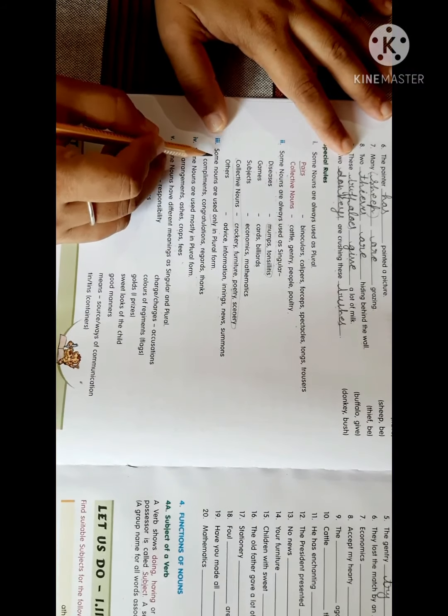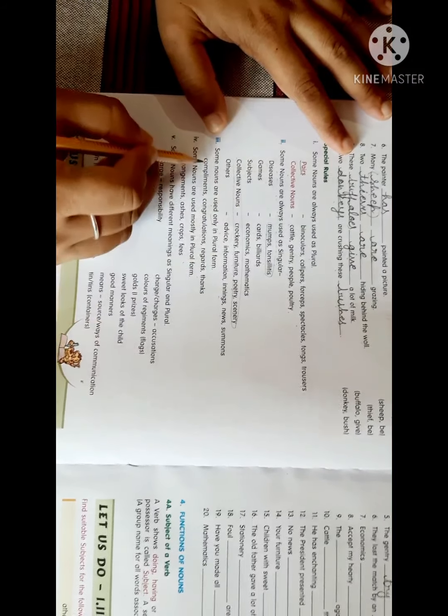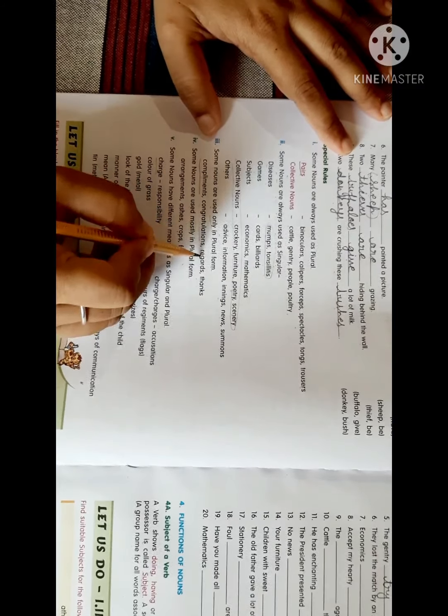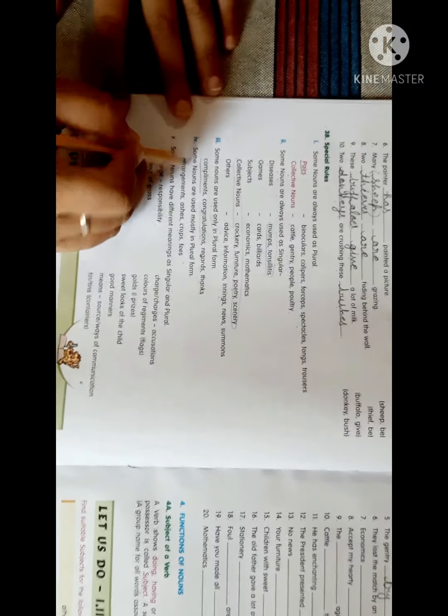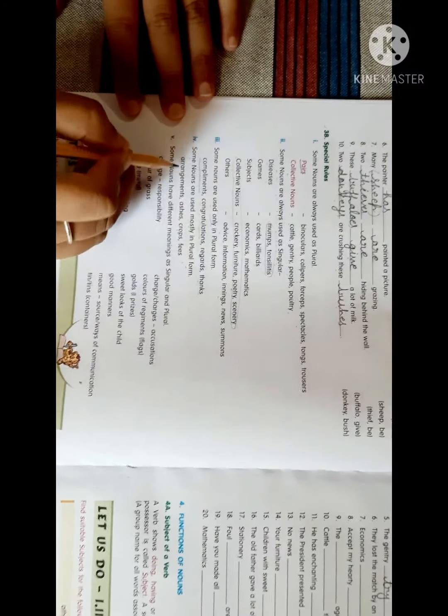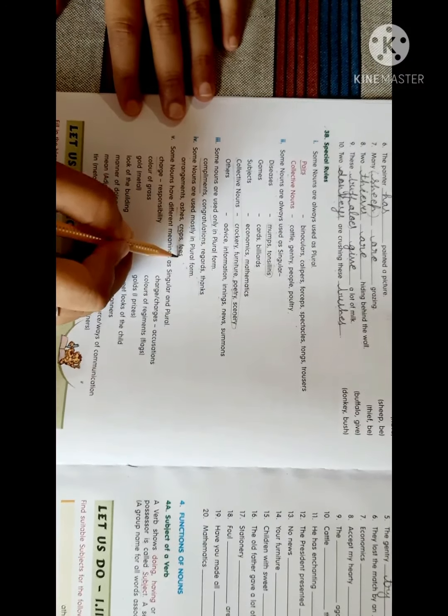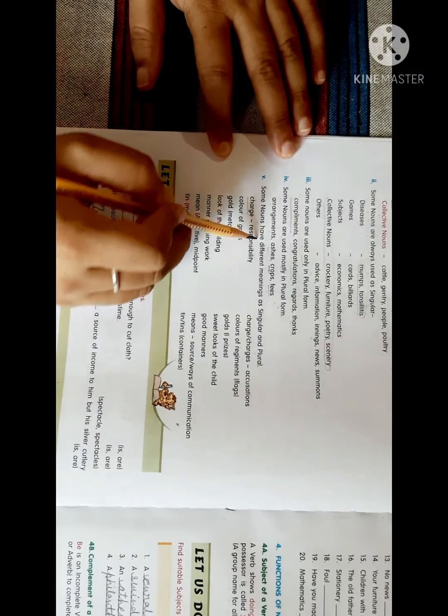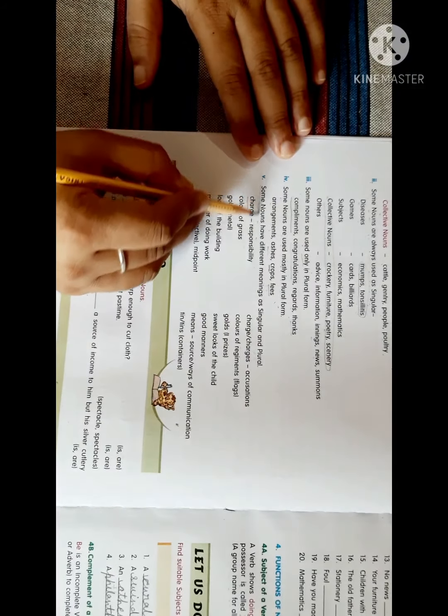Come to the third: some nouns are used only in plural form, which are compliments, congratulations, regards, thanks. Now the next: some nouns are used mostly in plural forms, which are arrangements, ashes, crops, fees.